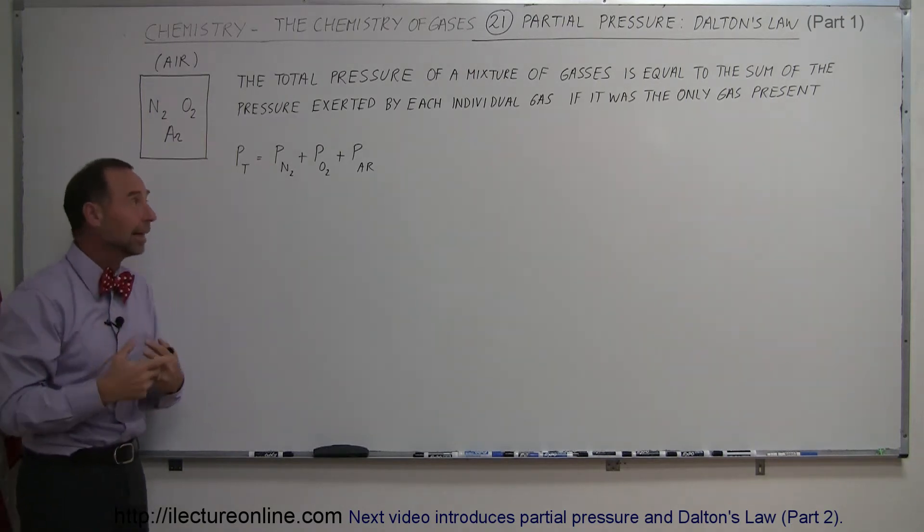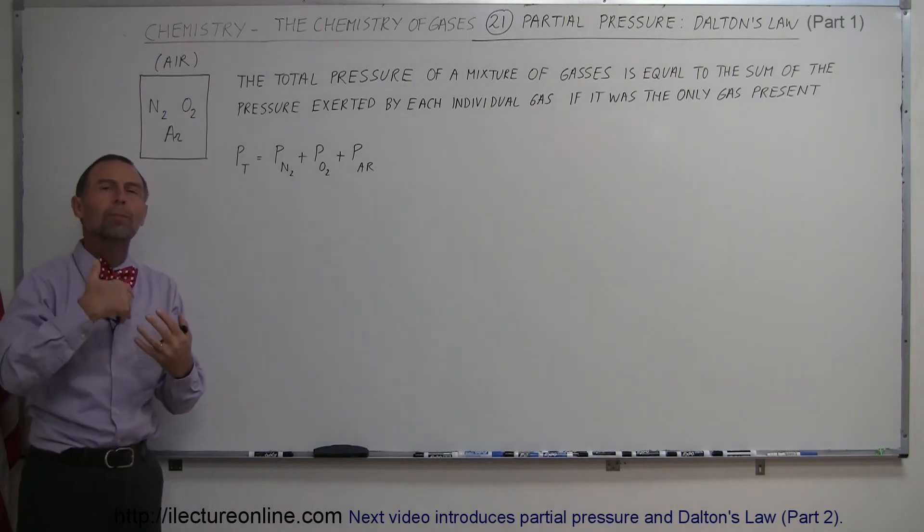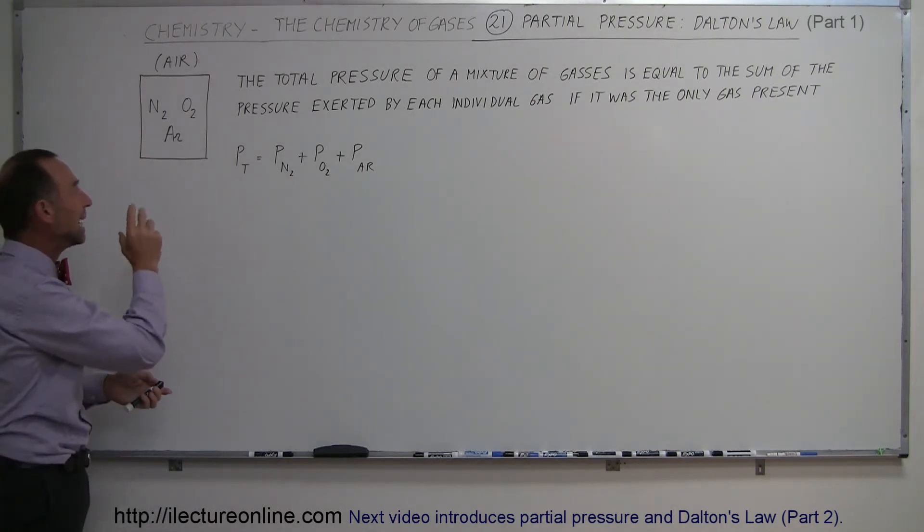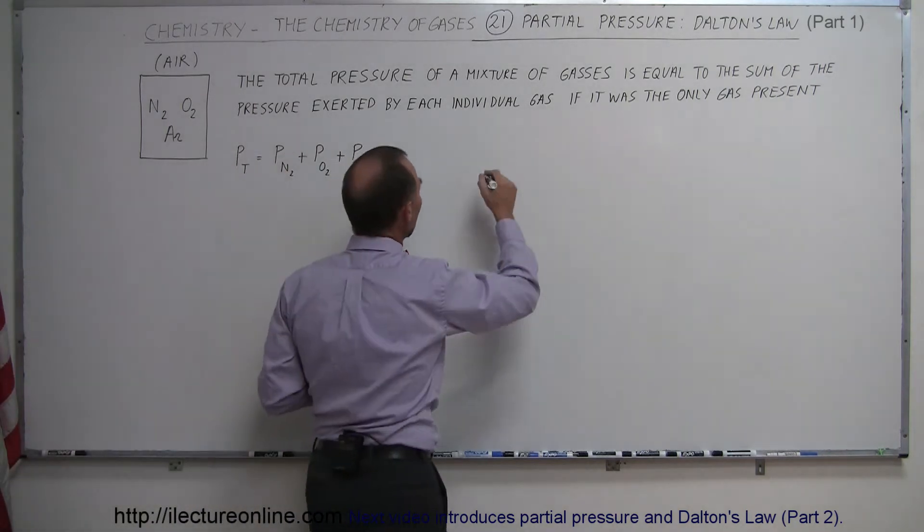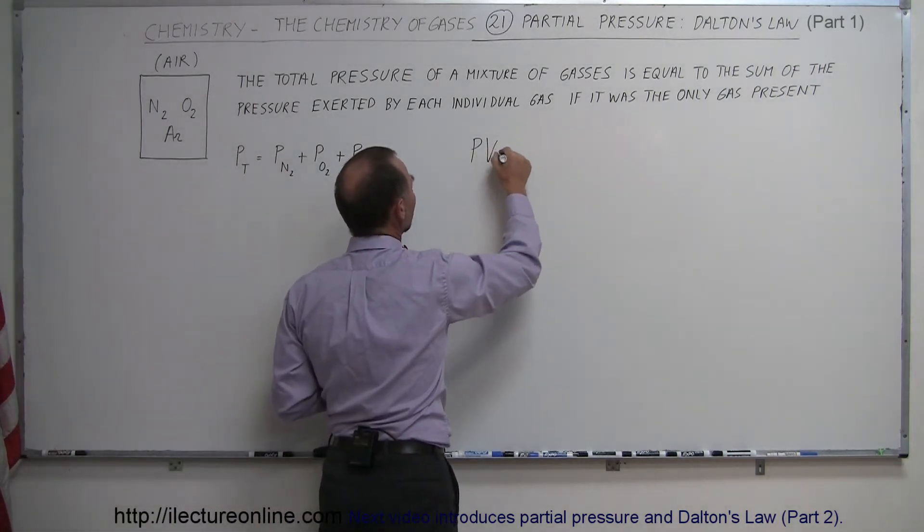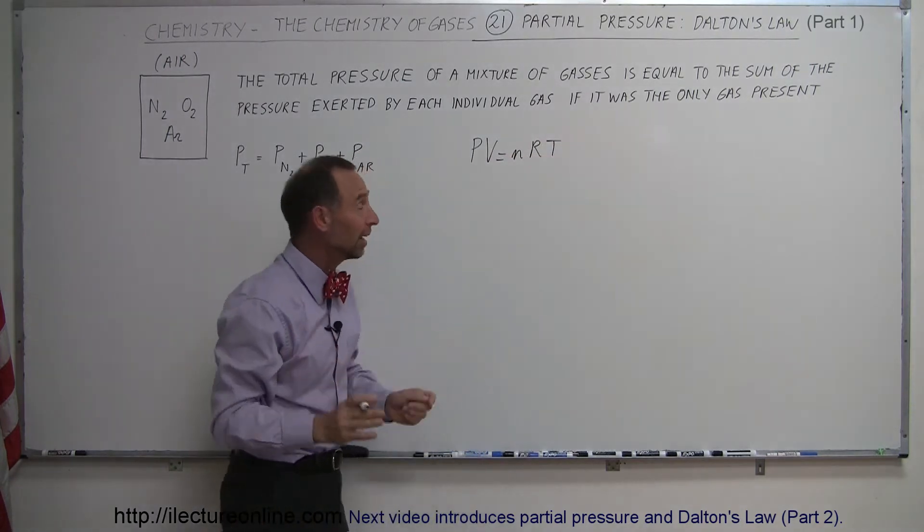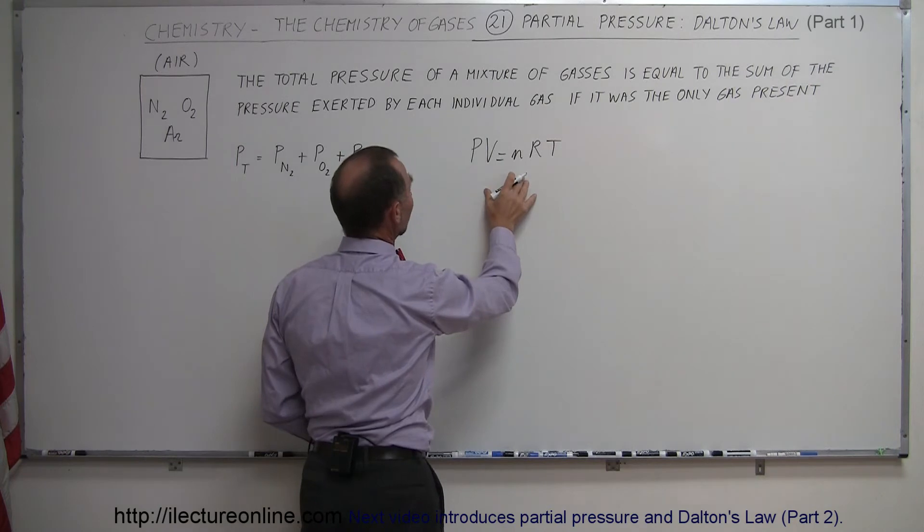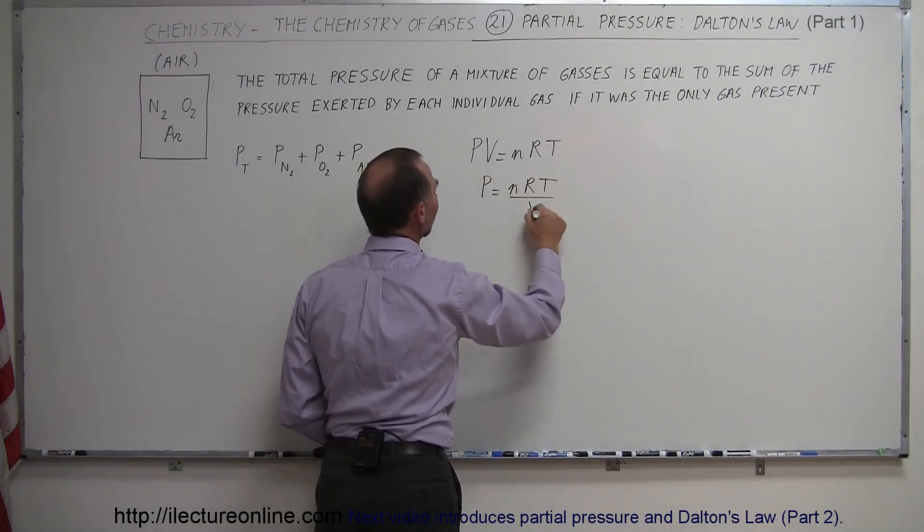Now, how do we utilize that in order to actually calculate the individual pressure, or the partial pressures, we call it, of each gas in a mixture? How do we calculate that? Well, we're going to use the equation PV equals NRT. It seems like we always use this equation, but it's a good equation. Let's divide both sides by V, so we get the pressure is equal to NRT divided by V.